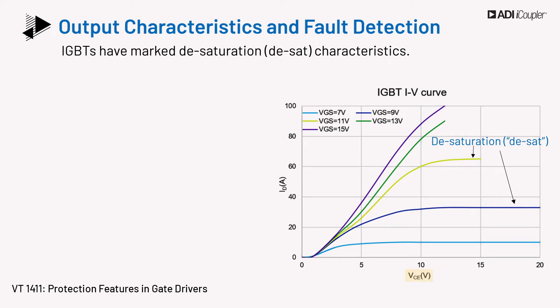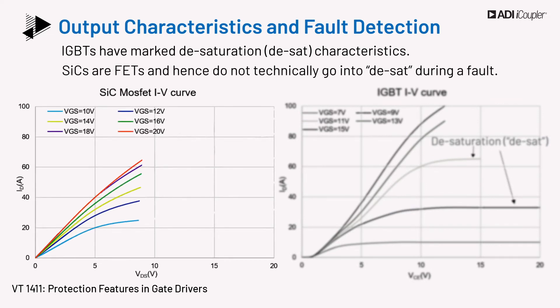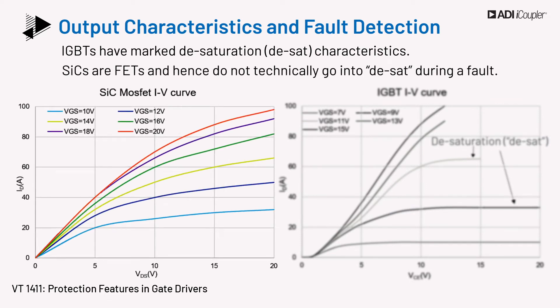A desat mechanism is used that relies on detecting the collector-to-emitter voltage during a fault and can help protect the device. The SiC MOSFET IV curve is different from that of the IGBT. SiC devices are MOSFETs and do not go into desaturation; their IV curve shows no flat desaturation like in IGBTs. But to ensure a smooth transition from IGBT to SiC and for ease of adaptability for customers, the protection circuit for SiC devices may still be referred to as desaturation detection.